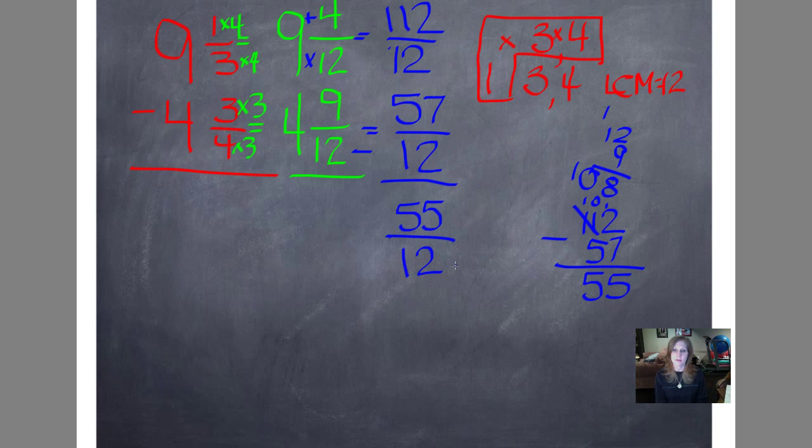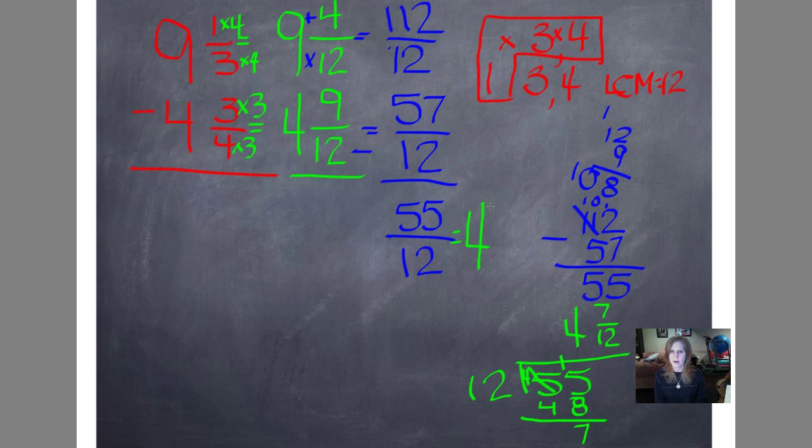And that is an improper fraction, so I need to do a division problem again. 55 goes in the house. 12 is outside the house. 12 goes into 55. Let's see. We already know if 12 times 4 is 48, that's probably as close as we're going to get. So we'll put 48 here. 15 minus 8 is 7, and 4 minus 4 is 0, so I have 7/12. My denominator stays the same. Equals 4 7/12. I know I'm not going to be able to simplify because 7 is a prime number, and it will not divide into 12 evenly. So this, 4 7/12, is my final answer.